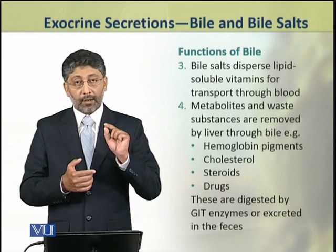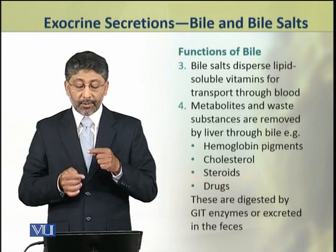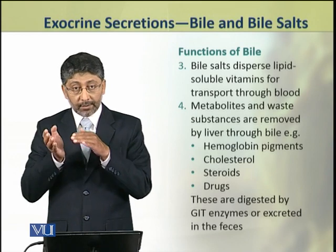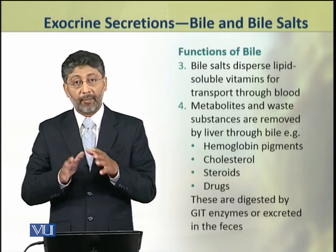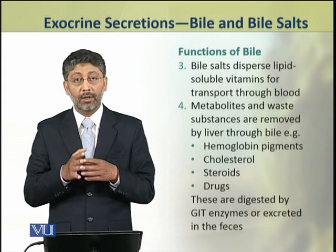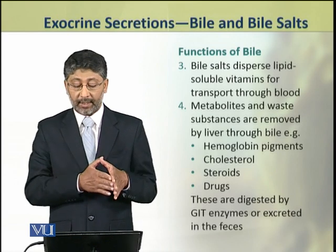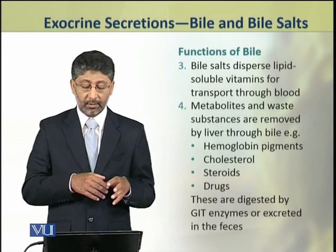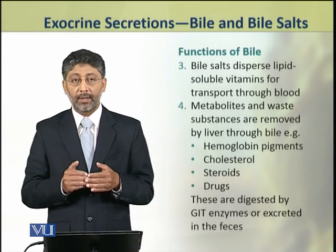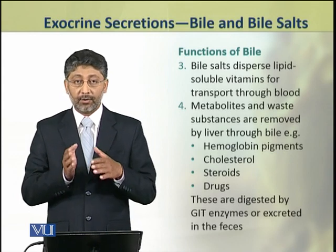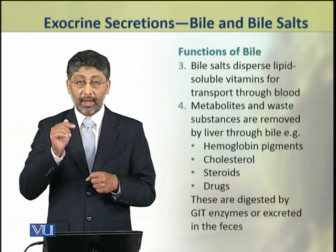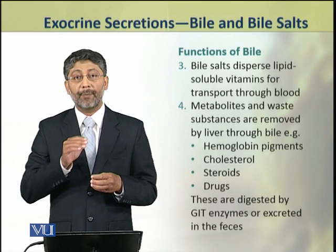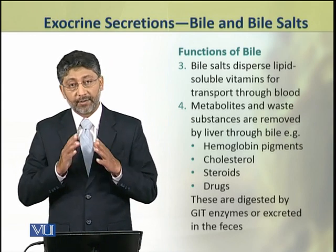Iske ilawa bile ko liver use karta hai to remove certain metabolites and waste substances. Liver ke liye gallbladder ek outlet ke taur pe kaam karta hai jis mein bile bheja jata hai. Bile mein aise tamam components jinko body se bahar release karvana ho, through the digestive tract, inko bile mein secret kiya jata hai. For example, the products of breakdown of hemoglobin pigments, cholesterol, steroids, and metabolites of drugs. Yeh tamam bhi bile mein shamil ho jate hain. Aur bile jab secret hota hai intestine mein to intestine mein gastro-intestinal enzymes in products ke upar act karte hain, ya to inko digest kar lete hain ya phir yeh products as such feces ke raste body se bahar excrete ho jate hain.